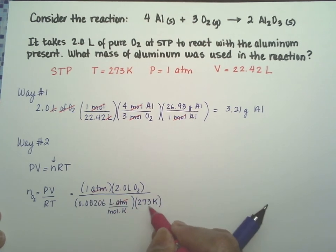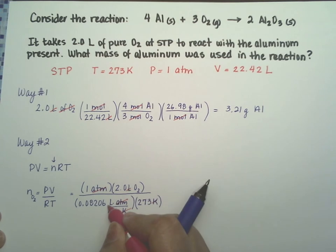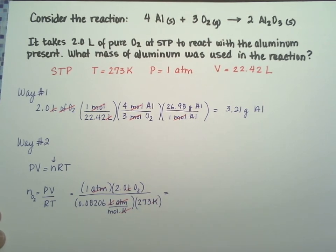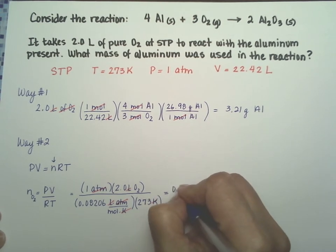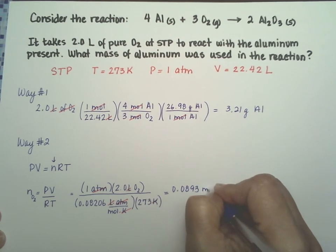Atmosphere cancels, Kelvin cancels, liters cancel. So that gives me the moles, which are 0.0893 moles of O2.